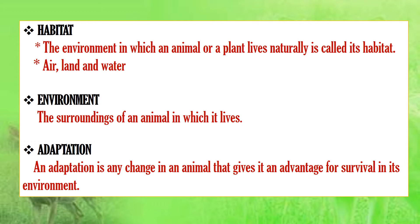Now, what is habitat? Habitat is the place or environment in which an animal or plant lives naturally. Air, land and water are the habitats for different kinds of animals. These places have different conditions of climate, temperature and availability of food and water.